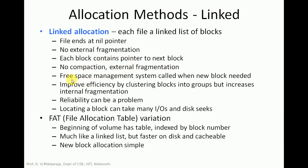A free space management system is called when a new block is needed. Efficiency can be improved by clustering blocks into groups, though this may increase internal fragmentation. One example of linked allocation is the File Allocation Table (FAT), used in older Windows operating systems. In FAT, the beginning of the volume contains a table indexed by block number, working like a linked list but faster due to caching.